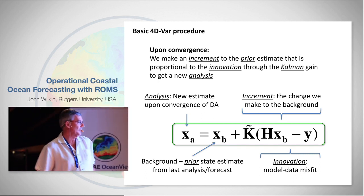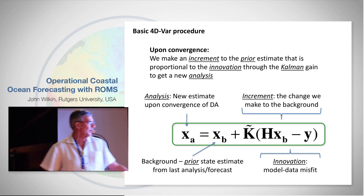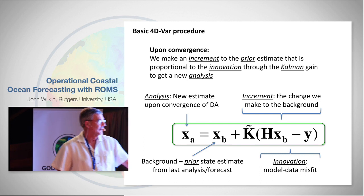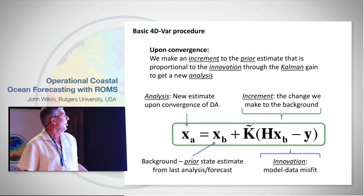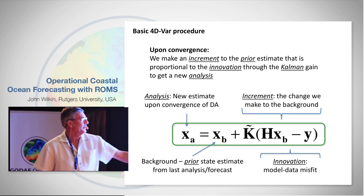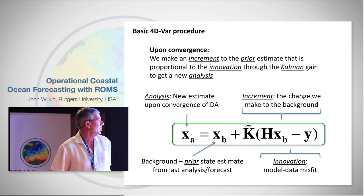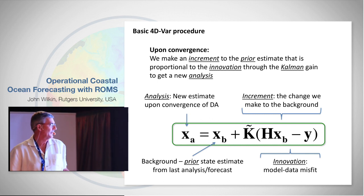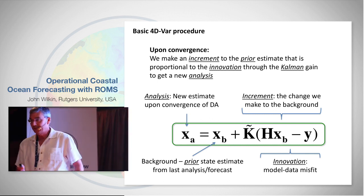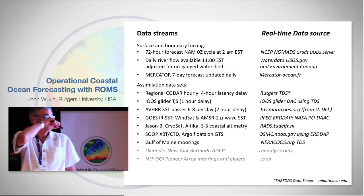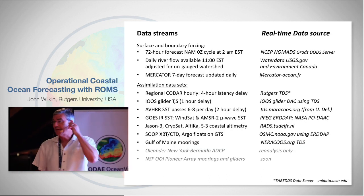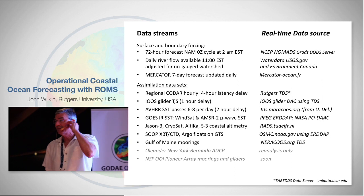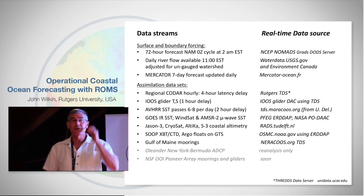So that covers the jargon: we've got the background state, the innovation, connected through the Kalman gain to give us our analysis. Now some practicalities — what are we using when we do this? The same forcing and boundary conditions I described for the standalone forward nonlinear model.